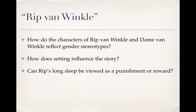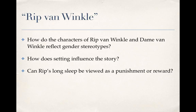Look at page 39. He actually meets his daughter: 'What is your name, my good woman?' asked he. 'Judith Gardiner.' 'And your father's name?' 'Ah, poor man. His name was Rip Van Winkle. It's 20 years since he went away from home with his gun, and never has been heard of since. His dog came home without him, but whether he shot himself or was carried away by the Indians, nobody can tell. I was then but a little girl.' Rip had but one more question to ask. He put it with a faltering voice: 'Where's your mother?' 'Oh, she too had died but a short time since. She broke a blood vessel in a fit of passion at a New England peddler.' So his wife died in an angry fit. 'There was a drop of comfort, at least, in this intelligence. The honest man could contain himself no longer. He caught his daughter and her child in his arms — I'm your father!' — cried he.